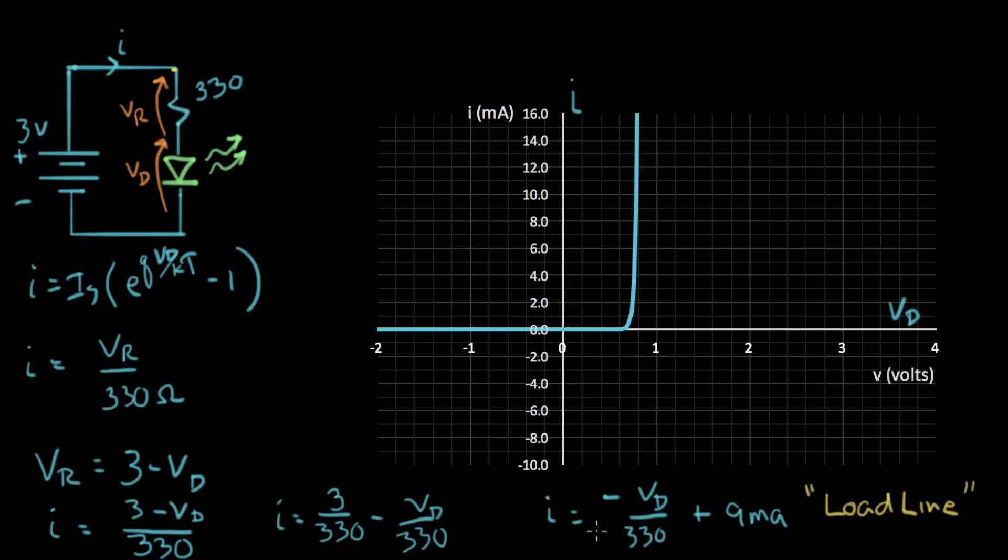Let's see if we can plot this line. Now it's a line so all we have to do is find two points that solve the line and then we'll be able to draw the line. So if I set VD equal to zero then I equals 9 milliamps. So here's VD equal to zero and it'll go through 9 milliamps. So that's one point on the line.